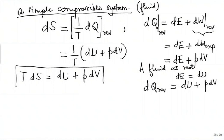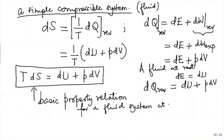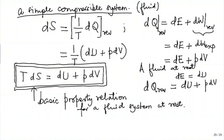This is known as the basic or principal property relation for a fluid — that is, a simple compressible system at rest. 'At rest' means there is no change in gravitational potential energy or kinetic energy. This is the most important relation and will be the basis of all other property relations which we derive for simple fluids, which we will do in the next lecture.